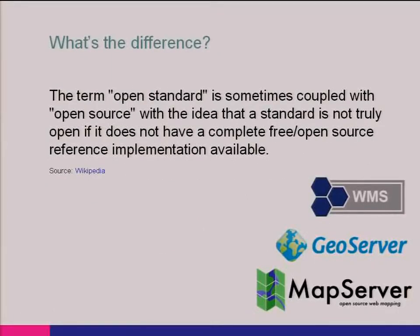I often see confusion between open standards and open source, typically among people who haven't done software development before. Open source is code — it's concrete software, and it may or may not implement open standards. Open source is created in a very open environment with community involvement and is publicly available. One of the great things about open source is that it can often speed up the adoption of open standards — for example, a beta release of software implementing a new standard can help work out bugs in each. Interestingly, you typically don't see open standards groups creating open source, and open source groups creating open standards.